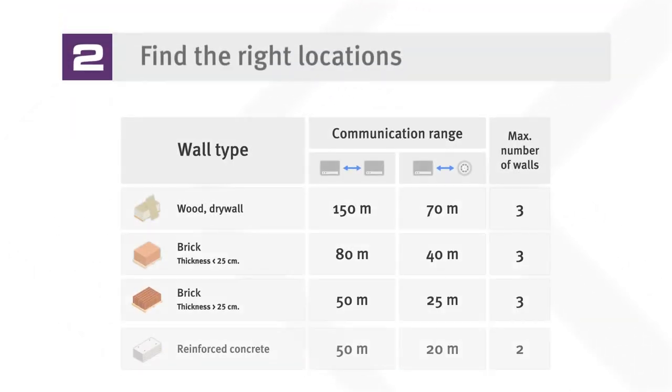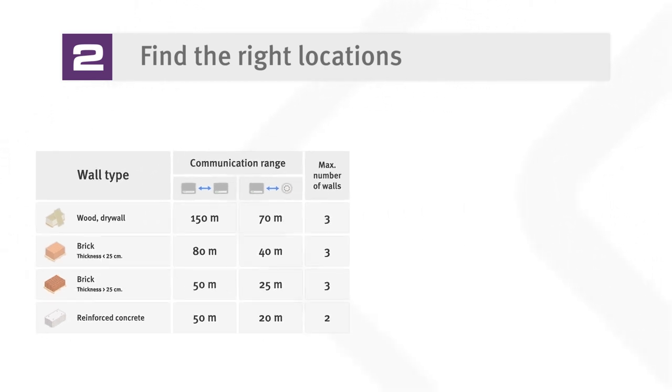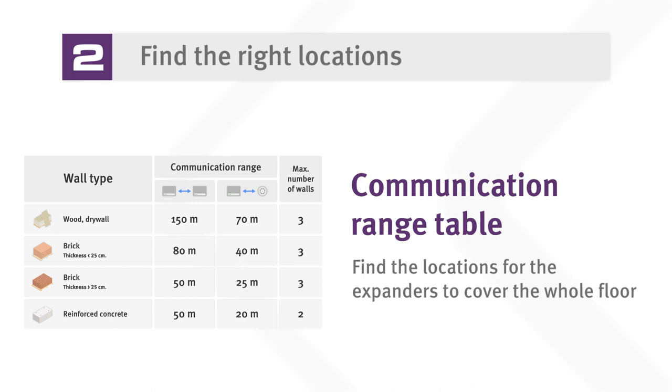Installation guide contains a table with typical values of communication range for buildings with different types of walls. This will help you determine the radius of the area covered by the expanders and distribute them evenly throughout the building.